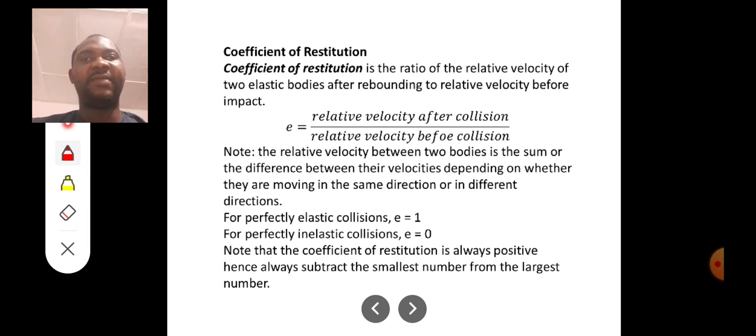Relative velocity after rebounding, that means after collision, over relative velocity before collision. Now, note that the relative velocities between two bodies is the sum or the difference between their velocities depending on whether they are moving in the same direction or in different direction.